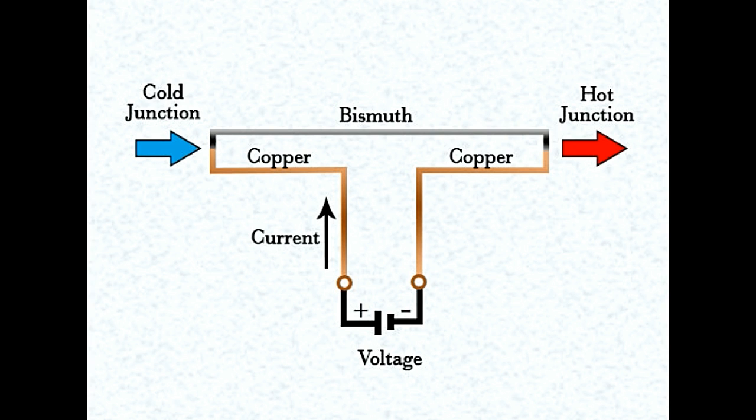The Peltier effect can be verified experimentally by using the following setup as shown. Two pieces of copper wire are connected to the two terminals of a battery. These two pieces are then interconnected with the help of a bismuth wire, which completes the setup.